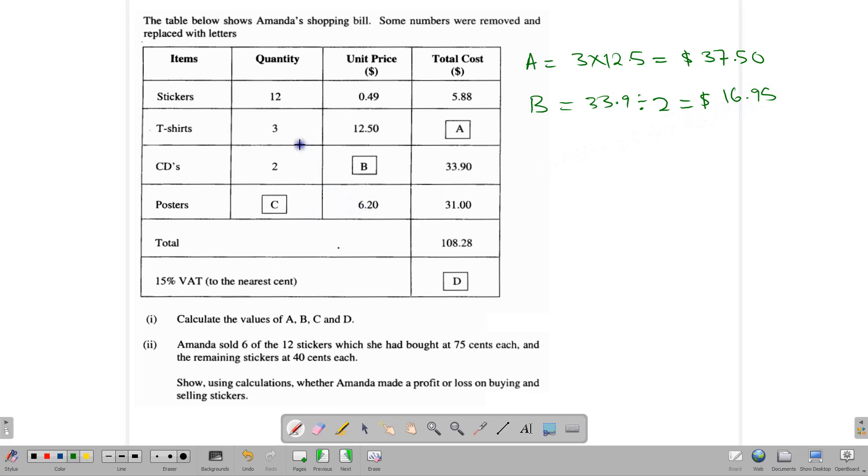C times the quantity, times the price, gives the total. So C times $6.20 gives us $31. So C is therefore equal to $31 divided by $6.20. And that gives us five items. That's five posters.